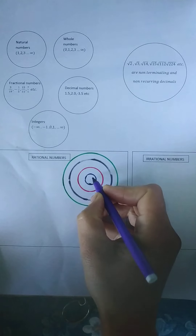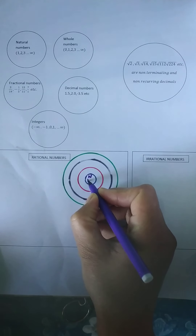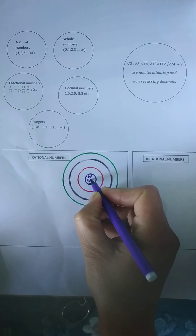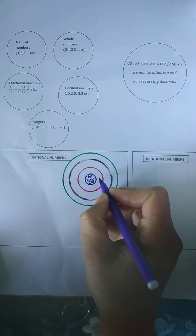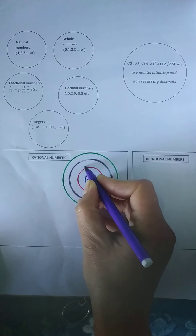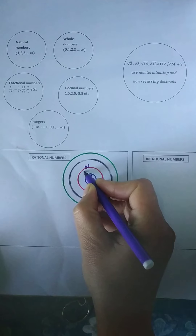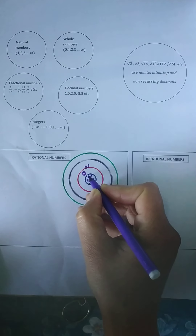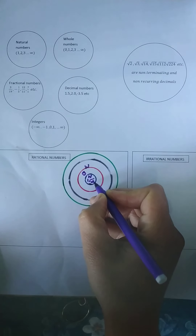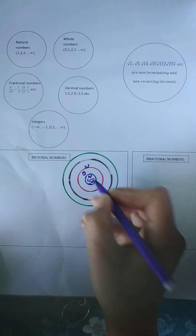That means natural numbers come within whole numbers. So here I can write: this inner circle is natural numbers, and it includes numbers from 1 to positive infinity. And this outer circle is whole numbers. So what extra does it include? It includes 0, and the numbers from 1 to infinity are also included since natural numbers sit within this circle.